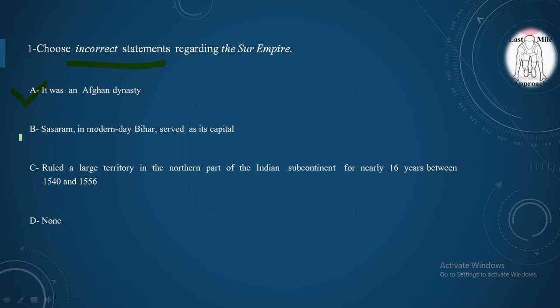B. Sasaram in modern day Bihar as its capital. Yes, it is also correct. Option C. Ruled a large territory in the northern part of the Indian subcontinent for nearly 16 years between 1540 and 1556. Yes, it is also a correct statement.